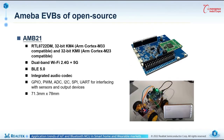The AMB21 uses the RTL-A722DM chip as well. This means it almost includes all the functions that the AMB23 has. The AMB21 has a higher set of peripherals — compared to the AMB23, it has more GPIO, PWM, SPI, and UART. The size is 71.3mm by 78mm.